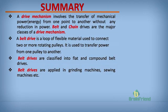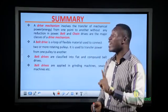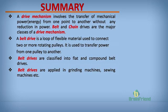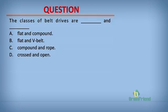In summary, a drive mechanism involves the transfer of power or energy from one point to another without any reduction in power. Belt and chain drives are two major classes of drive mechanism. A belt drive is a loop of flexible material used to connect two or more rotating pulleys to transfer power. Belt drives are classified into flat and compound belt drives, and are applied in grinding machines, sewing machines, etc.